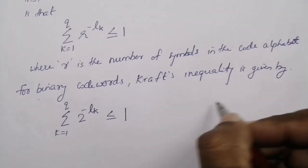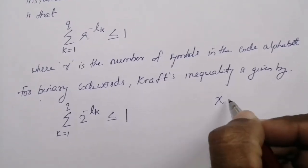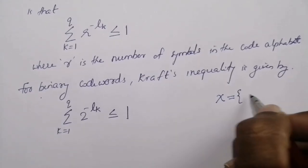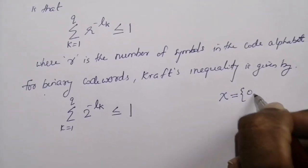Consider two code symbols in the code alphabet. Let X be the code alphabet. Then the code symbols are 0 and 1.